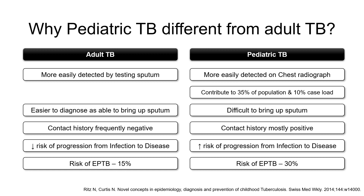If we take all cases of pediatric tuberculosis, we very often get a positive contact history with another case of open pulmonary tuberculosis, but in adult patients we don't get a positive contact history very often. So if we base our diagnosis on the presence of contact history, we may miss some cases of adult tuberculosis, but in pediatric tuberculosis a positive contact history is very often present.